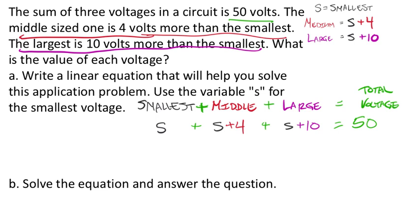That's the linear equation that they want us to solve. Let's go ahead and solve it then. I would combine—I've got one, two, three S's. Three S's. And then I've got a 4 plus a 10, which is going to be positive 14. So this equals 50.